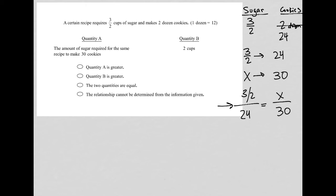I don't like the math here. Let's turn it to decimal form instead. So 1.5 over 24 equals X over 30, since three halves is the same as 1.5.